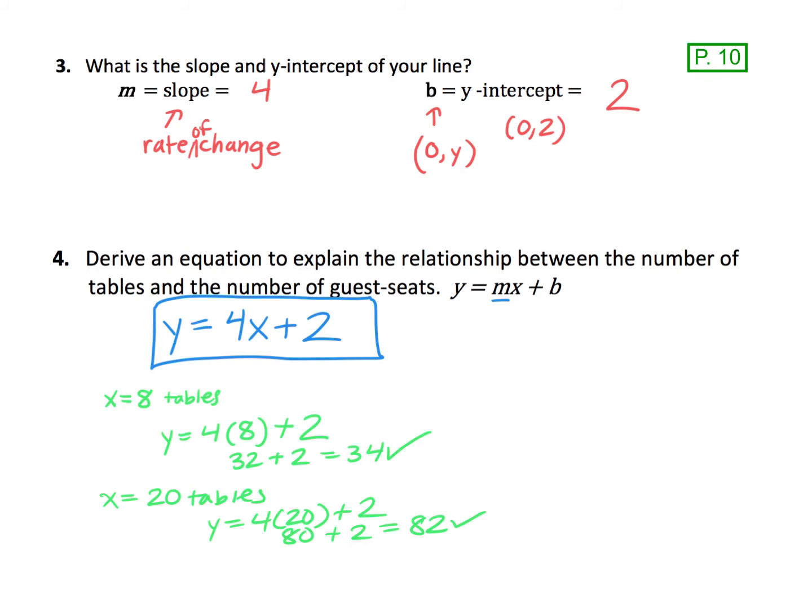The equation is really helpful because now if I ask you how many guests could fit at 55 tables, you wouldn't need to make a big giant table. You could just put 55 in place of x and then solve for y by doing 4 times 55 plus 2. So the equation makes it a lot easier to extend the pattern well beyond the numbers that you used to come up with the formula.